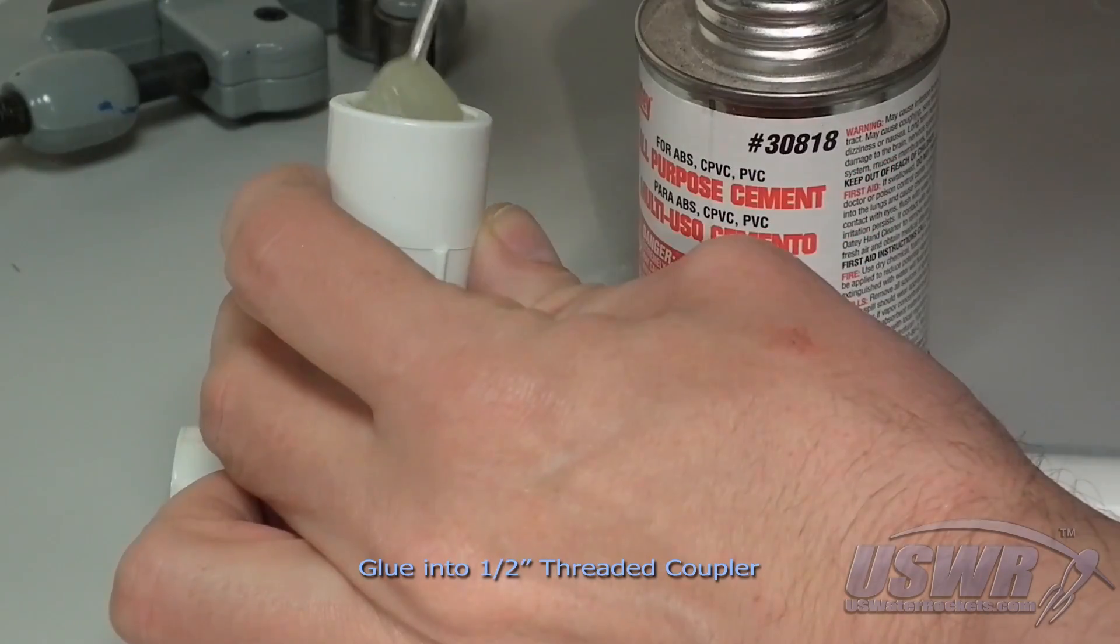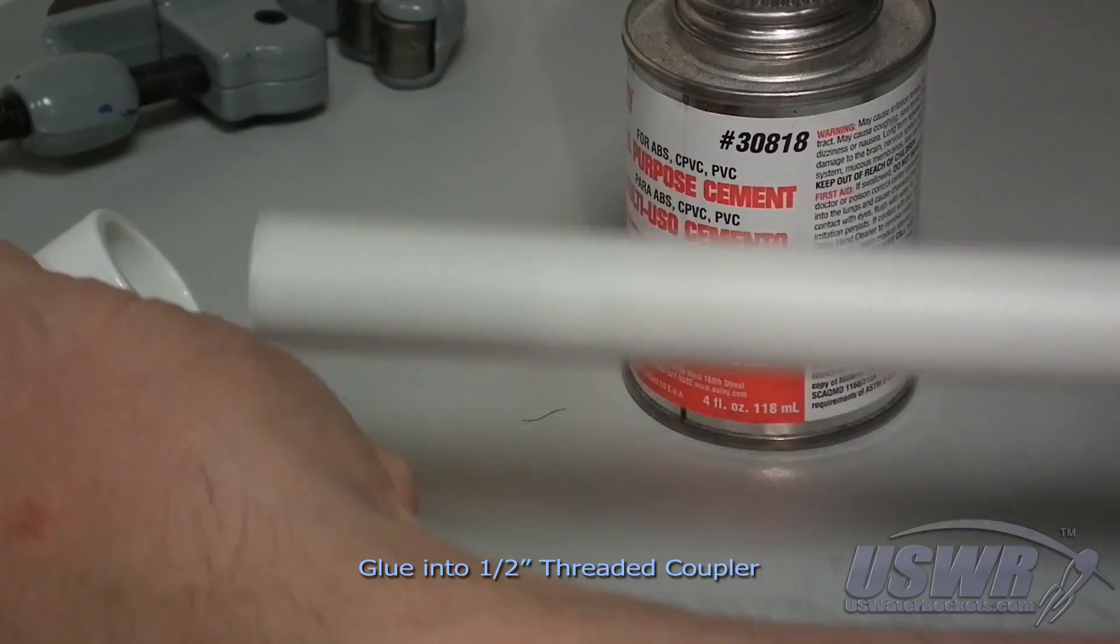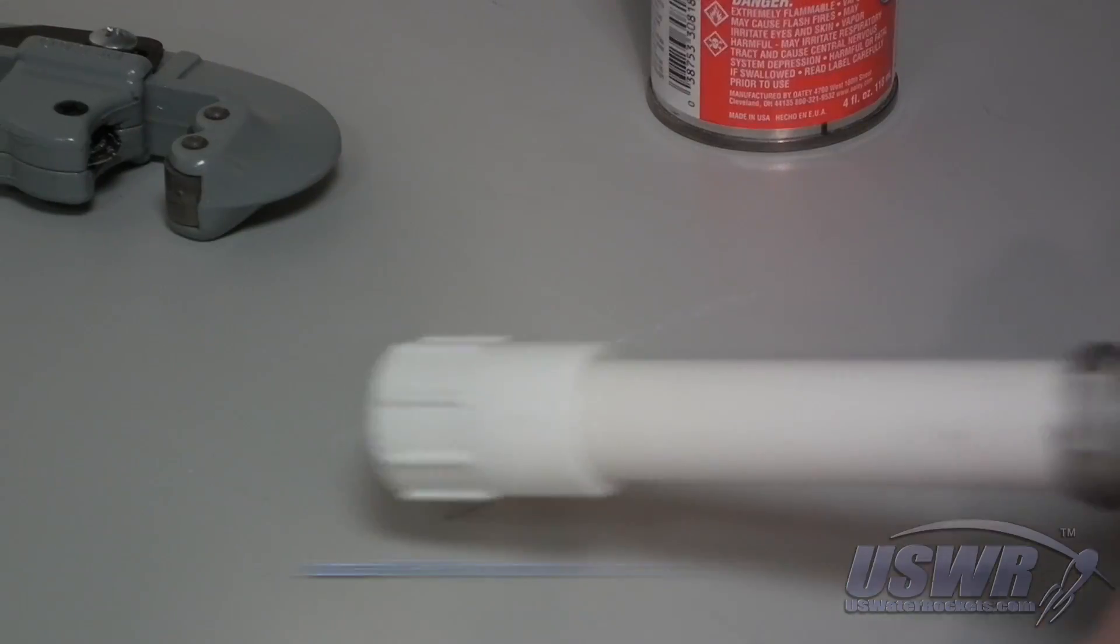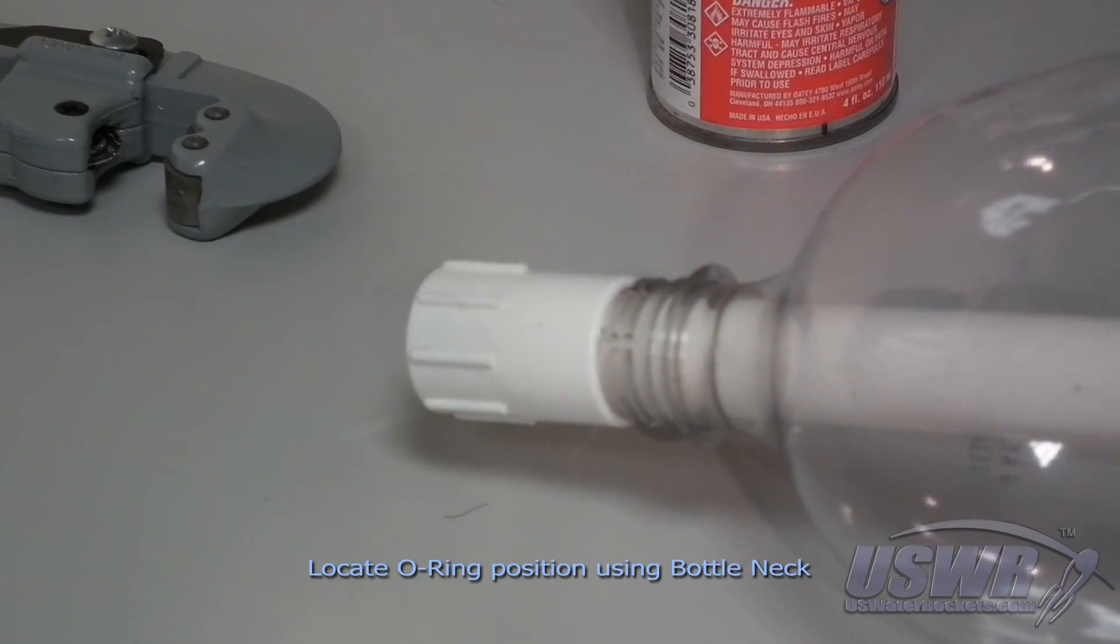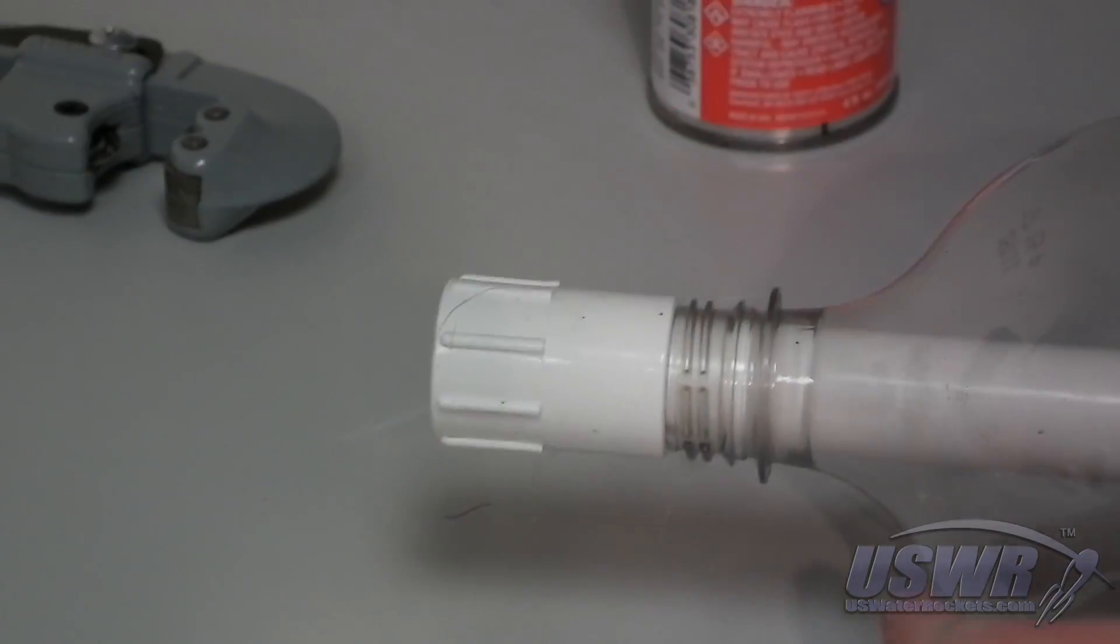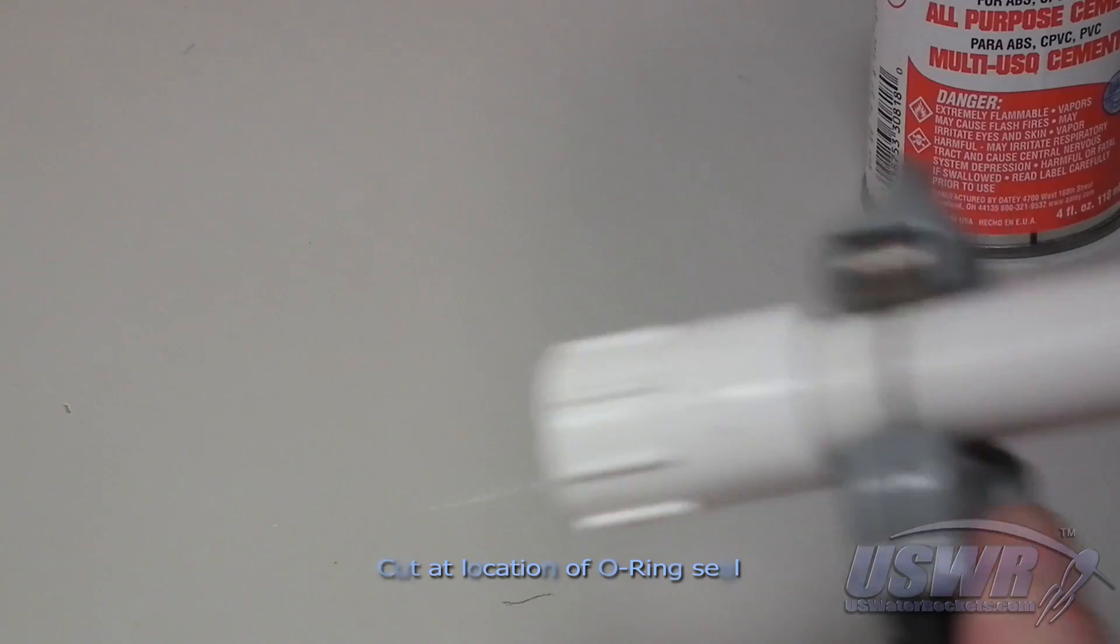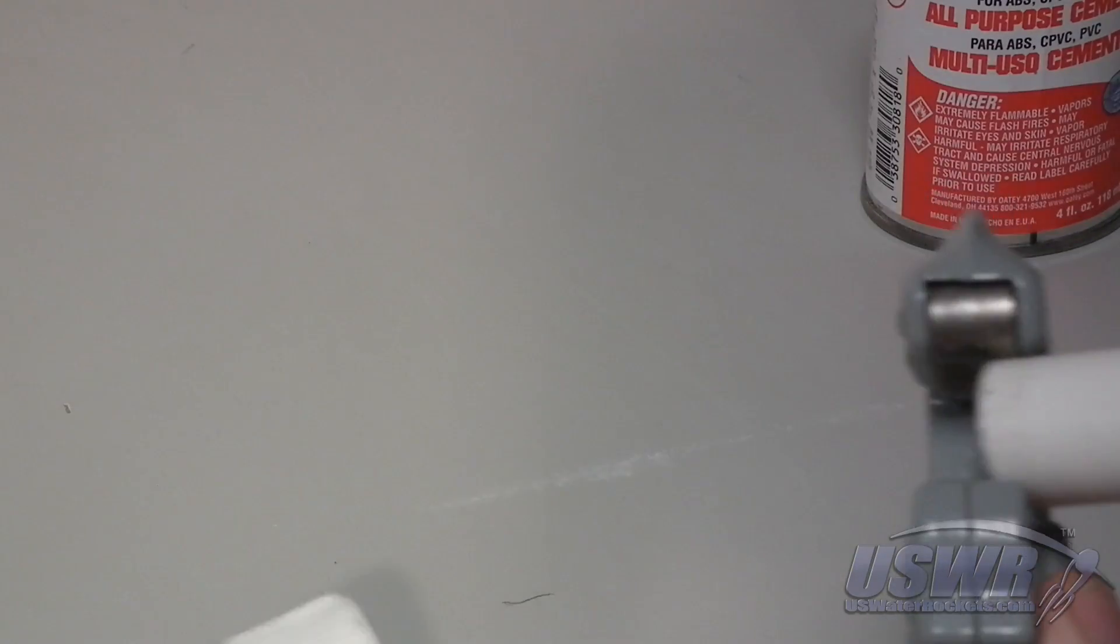Glue the cutoff launch tube into a 1 1/2 inch PVC threaded coupler. Slide a bottle onto the launch tube until it seats fully. The o-ring should be located on the launch tube at the point where the bottle threads stop. Cut the launch tube at the o-ring location.